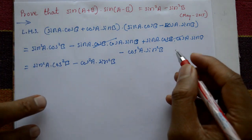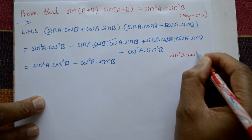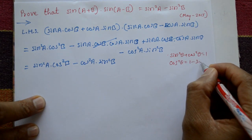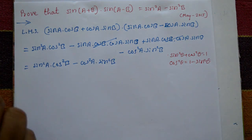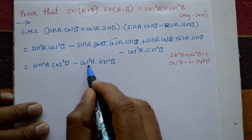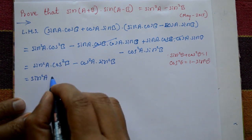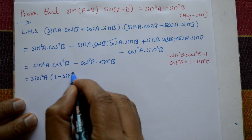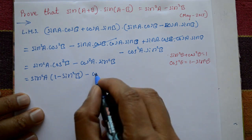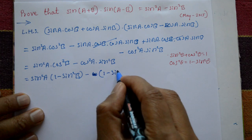Now, using the basic Pythagorean identity: sin²θ + cos²θ = 1, so cos²θ = 1 - sin²θ. We need both terms in terms of sin, so we replace cos²b with (1 - sin²b) and cos²a with (1 - sin²a).